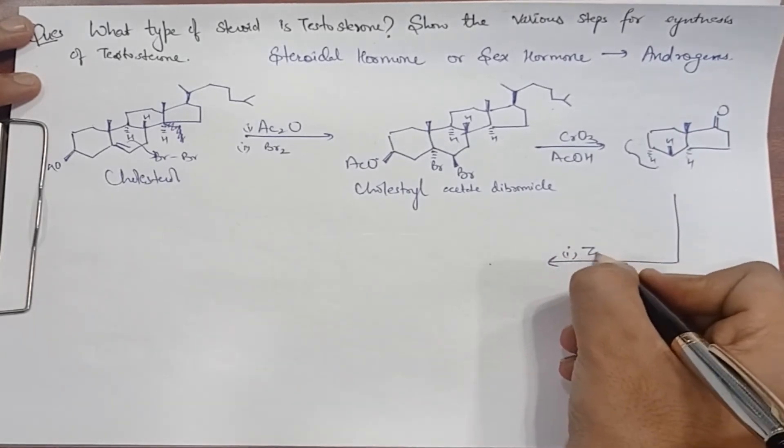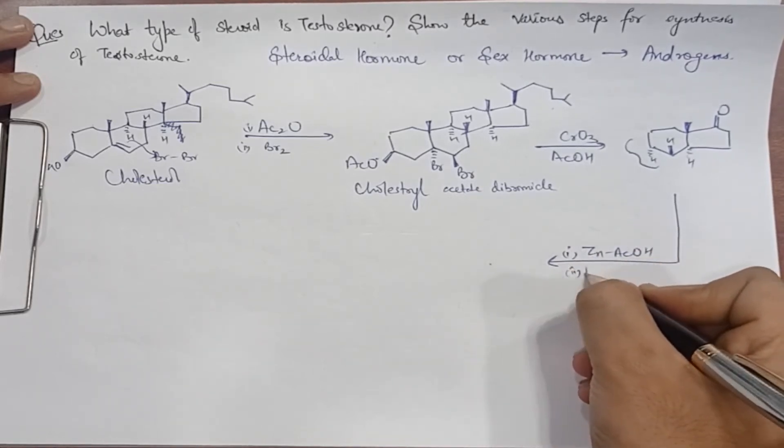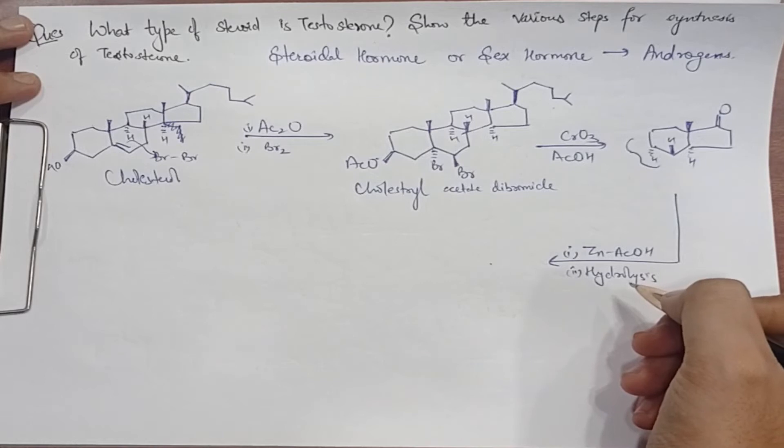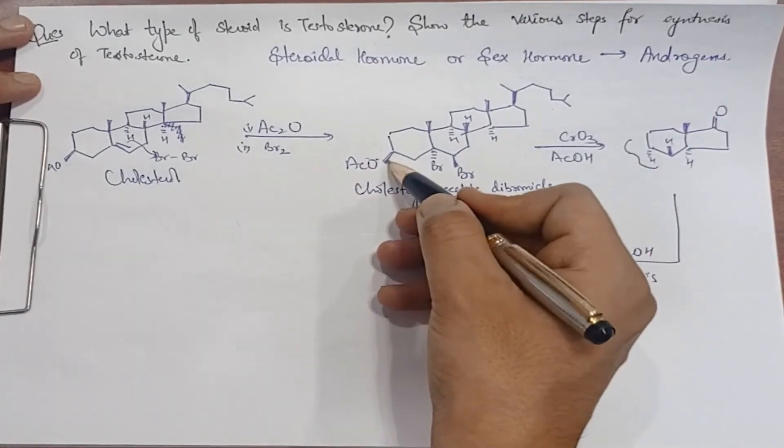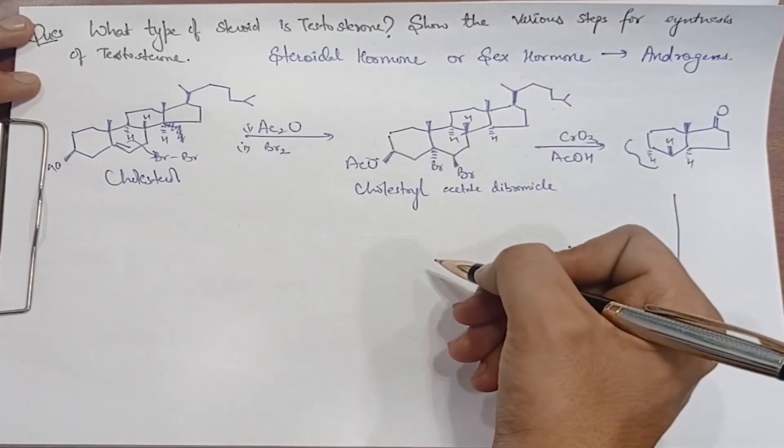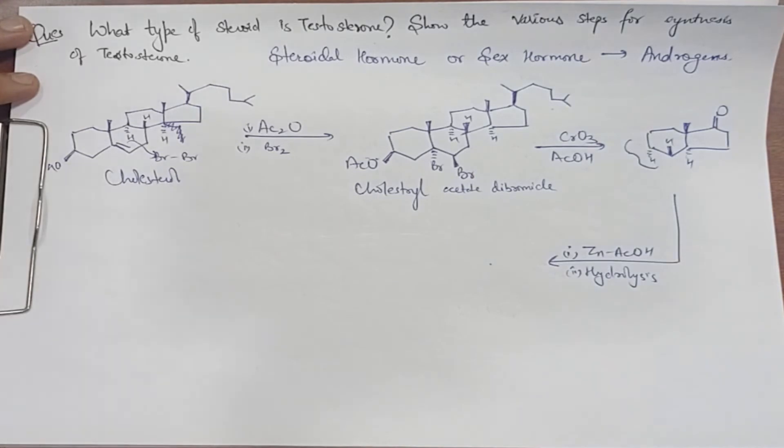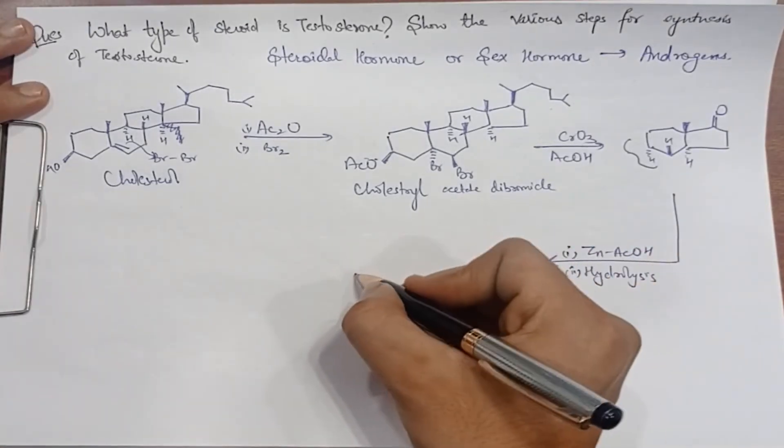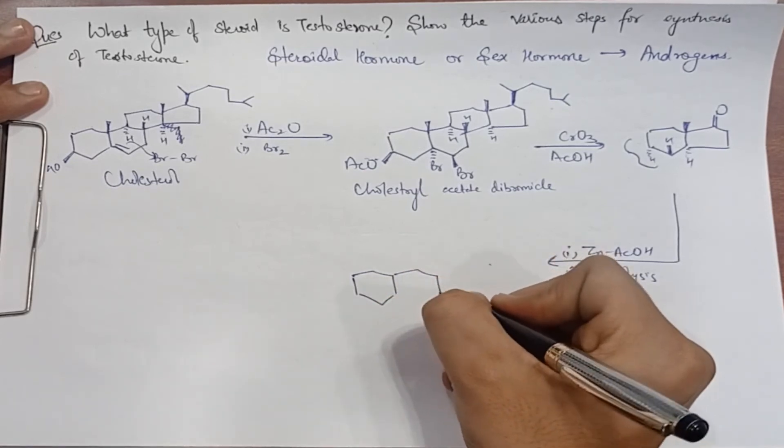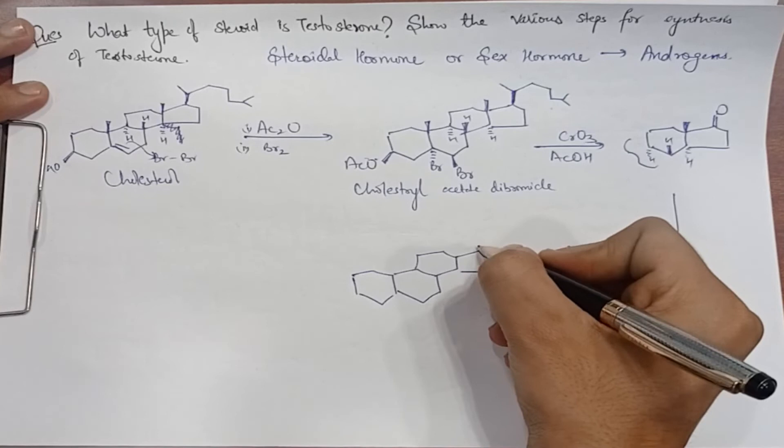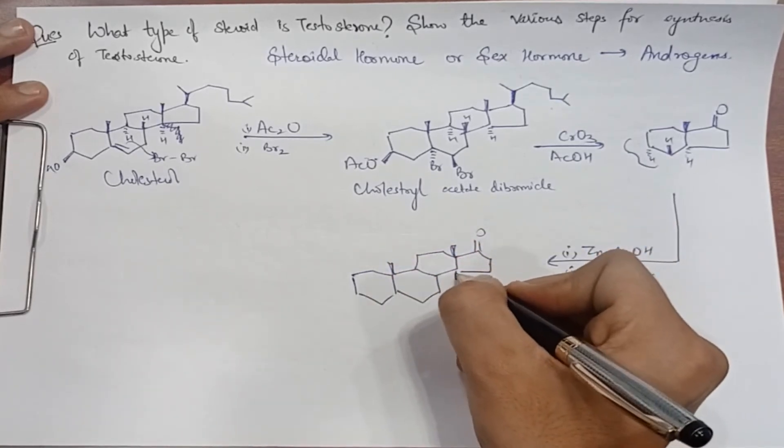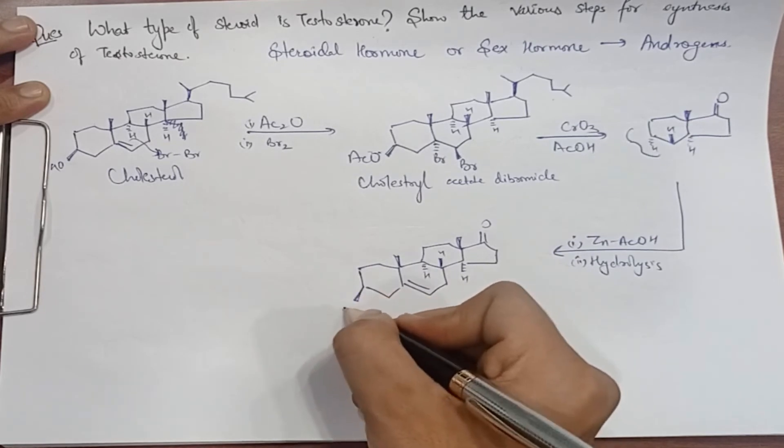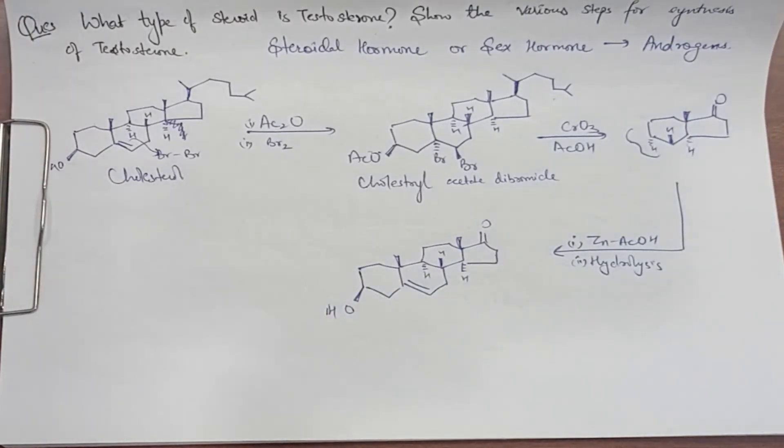Next step: zinc in the presence of acetic acid, and second process step we will do hydrolysis. First zinc in acetic acid, then hydrolysis. What will happen? The acetate group in this structure will go to OH group. In the same way, our bromine will also undergo hydrolysis with zinc and acid, then we will have a double bond. Here we have double bond, two angular methyl groups, hydrogens, and here we have OH group. This is our dihydro epiandrosterone.